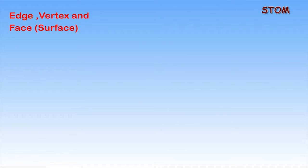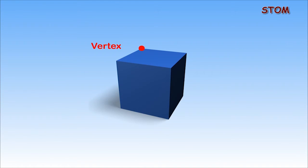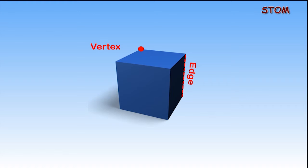Edge, vertex and face. The edges, vertices and faces are used to define the properties of shapes. From the cube, you can see that the vertex or what is referred to as the corner, the edge and the face.